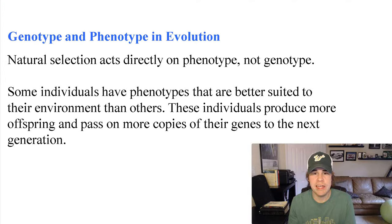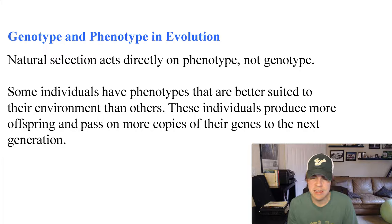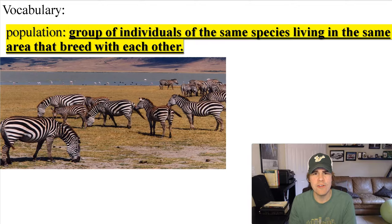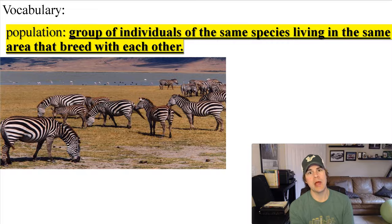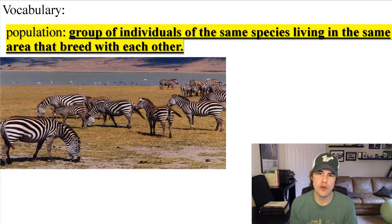Natural selection only acts on phenotypes — what organisms can physically show — not genotypes. Some individuals have phenotypes that are better suited to their environment, and therefore those individuals have a higher fitness level. Population, which we covered back in ecology, is a group of individuals of the same species living in the same area that breed with each other.